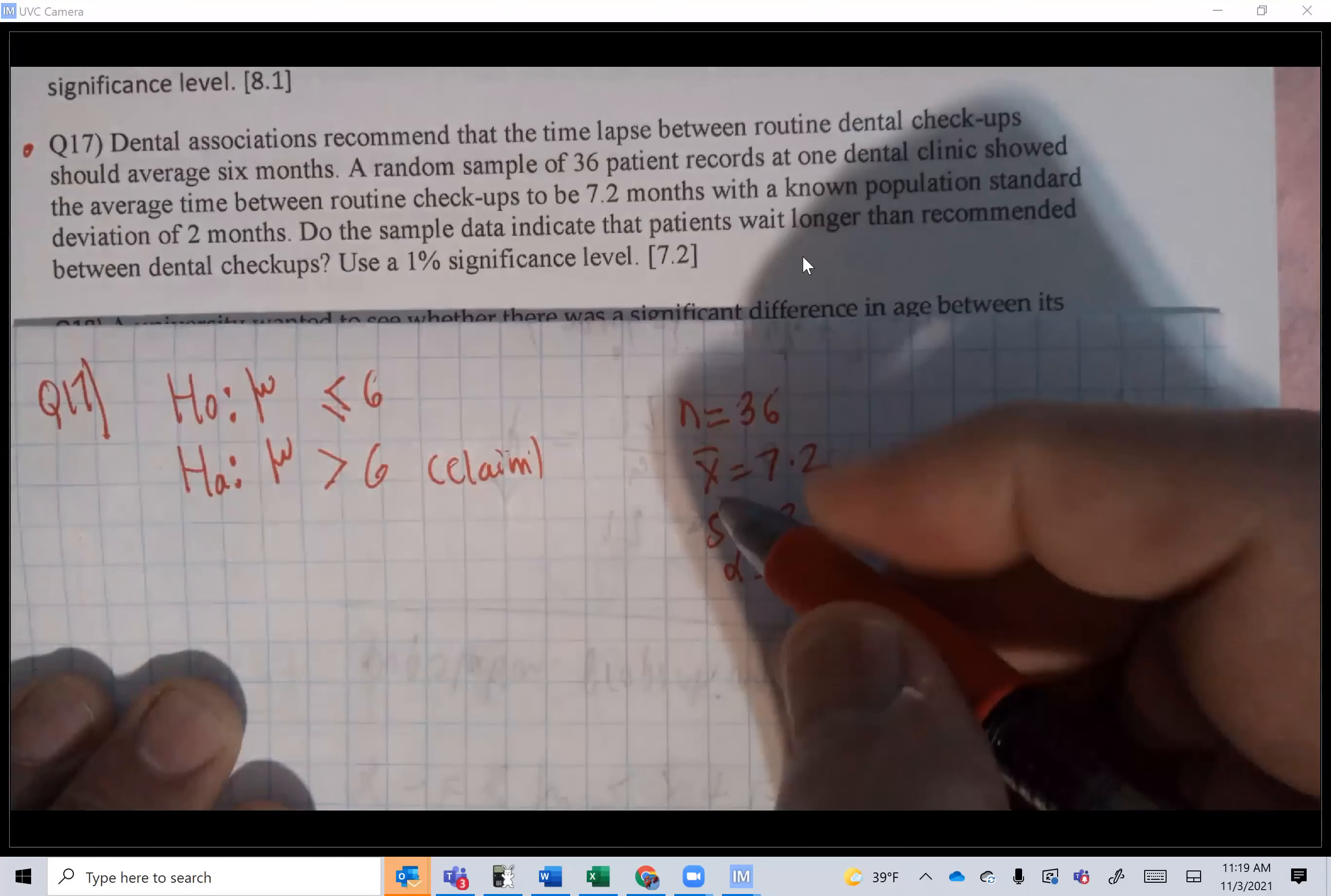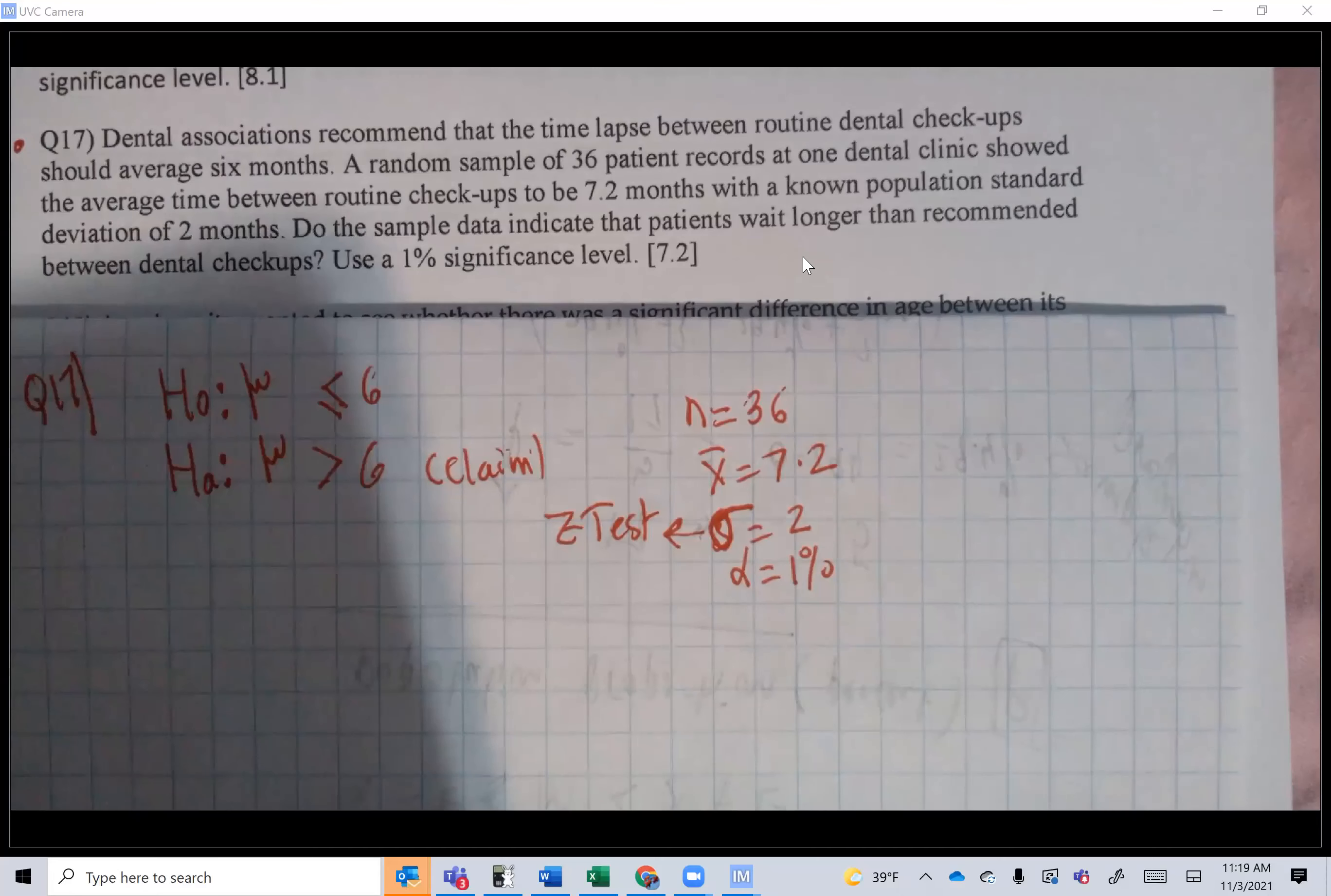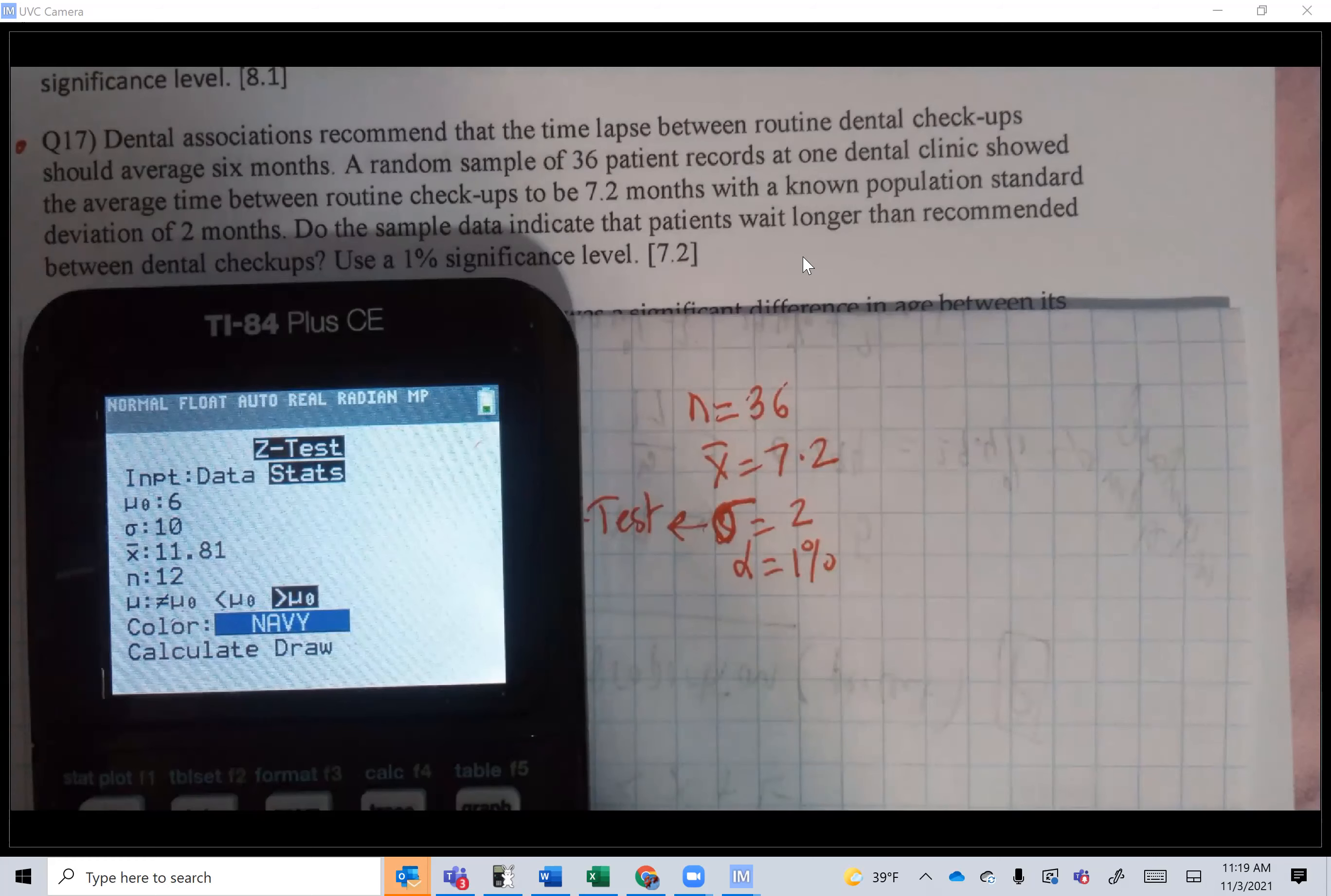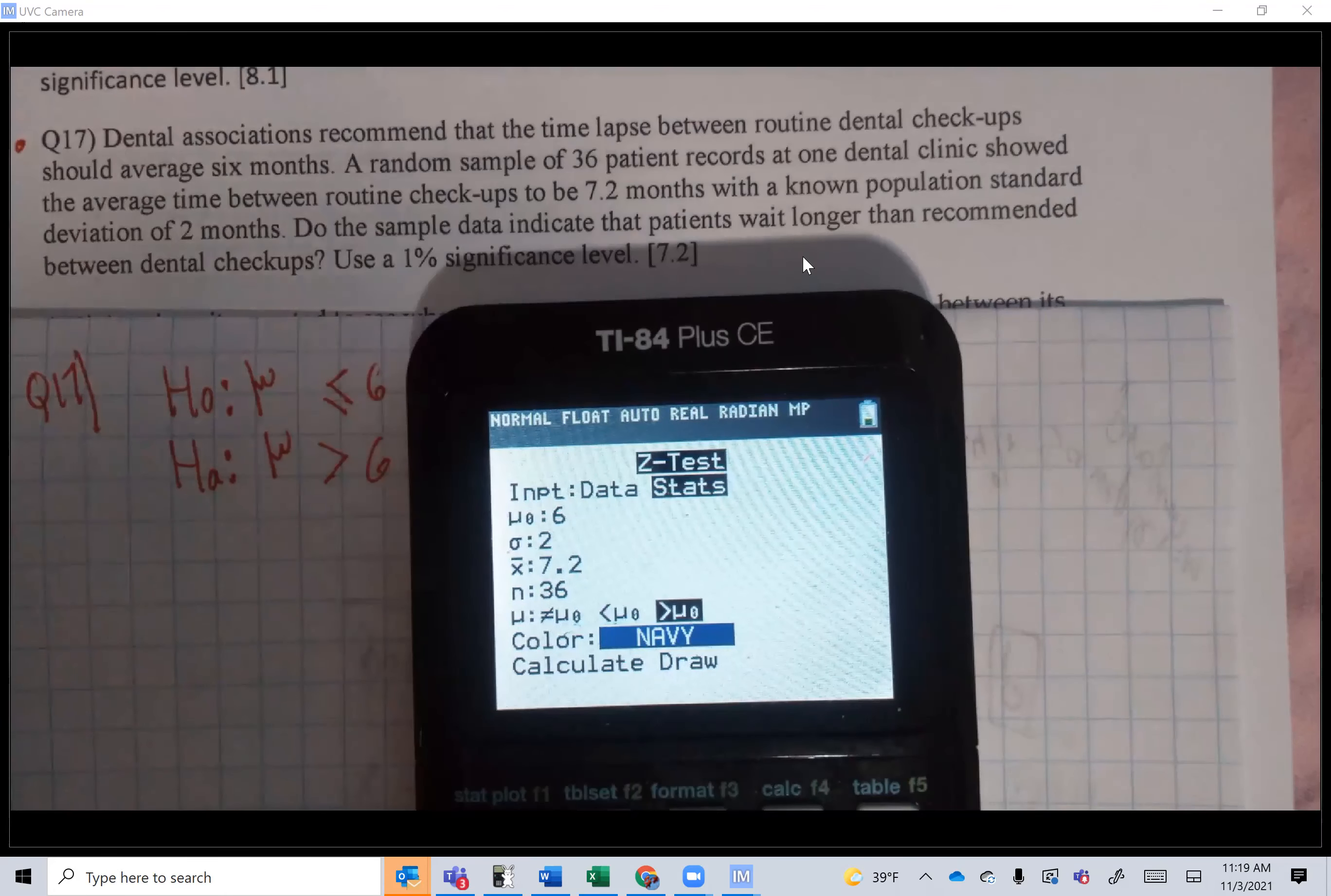It's not... as he says, known population standard deviation. Let me just make it clear, that's sigma. Because this is sigma, we have to use a z-test. This is the only time where we use a z-test. Let's do this. Stat, tests, number one, z-test. Data, not data, stats. μ₀ is six months, sigma is 2, x̄ is 7.2, n is 36 patients, and greater. This is greater than, I'm going to need greater than here. Calculate. Z is 3.6.